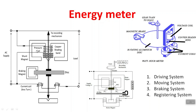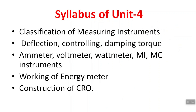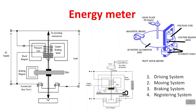The pressure coil is also known as the voltage coil. The voltage coil is connected in parallel with the load. The current coil is connected in series. Another part of the driving system is the copper shaded bars or bands, which are part of the upper electromagnet.